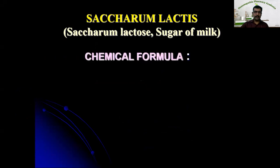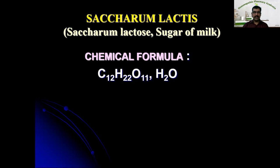The chemical formula of lactose or saccharum lactis is C12H22O11·H2O. Lactose is used as a homeopathic vehicle because it is the least sweet sugar substance. Another property of lactose is it is gritty in nature, which helps in the trituration process of preparation of homeopathic medicine.